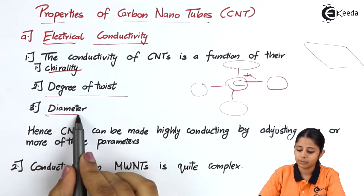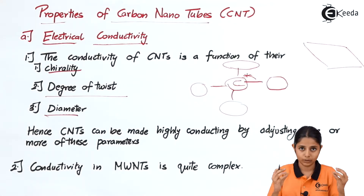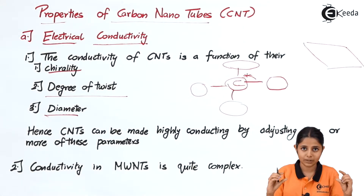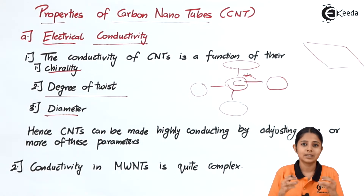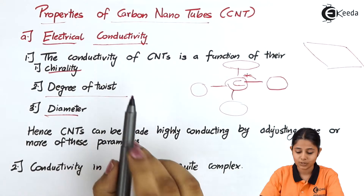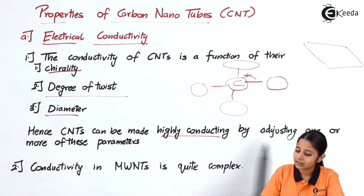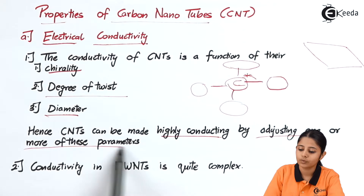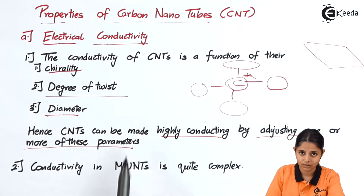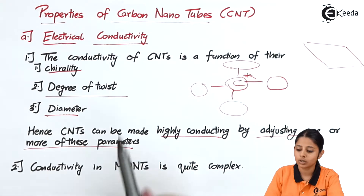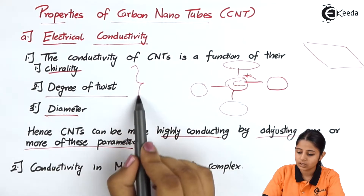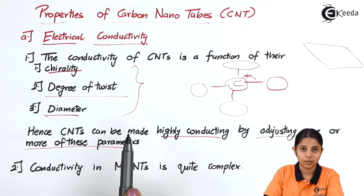Point number three is the diameter. The tube is hollow from inside and there is a certain diameter present in it. Because of that diameter, there is electrical conductivity present in the carbon nanotubes. Carbon nanotubes can be made highly conductive by adjusting one or more of these parameters — chirality, degree of twist, or diameter.